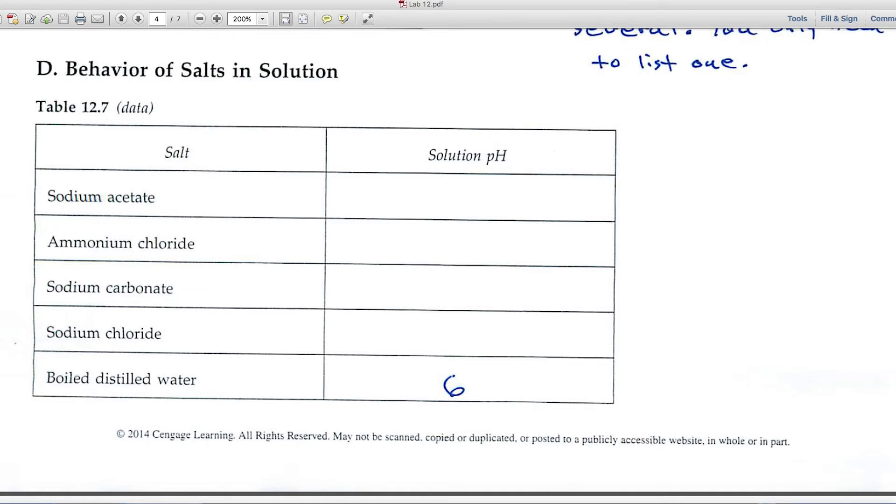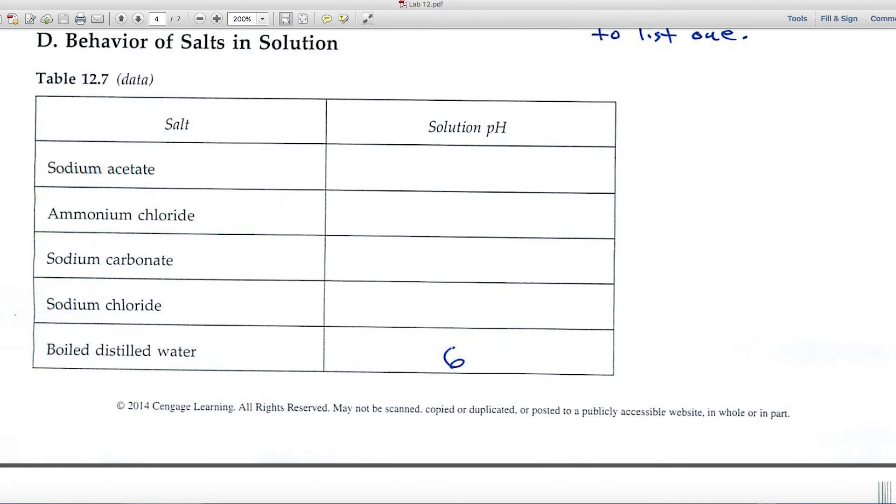If it's freshly distilled water, it might be 7, but as water sits around a little bit, it absorbs carbon dioxide from the atmosphere that lowers its pH just a little. And you'll be comparing these pHs to the pH of distilled water at 6.